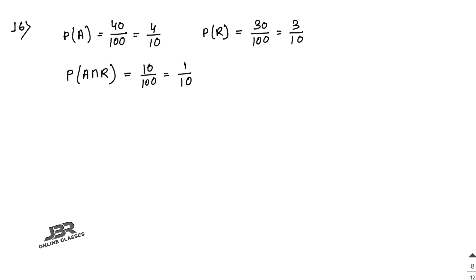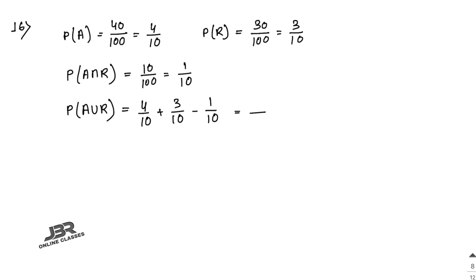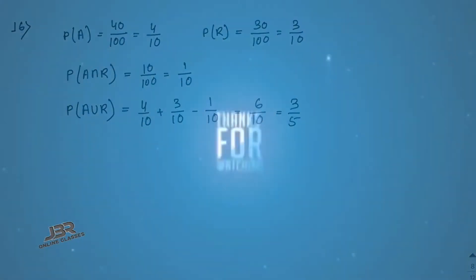If a student is selected at random, find the probability that he will be punctual or regular or both — that means find P(A union R). So 4/10 + 3/10 − 1/10, and the answer is 6/10 = 3/5.